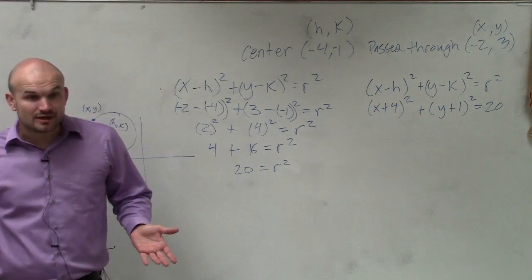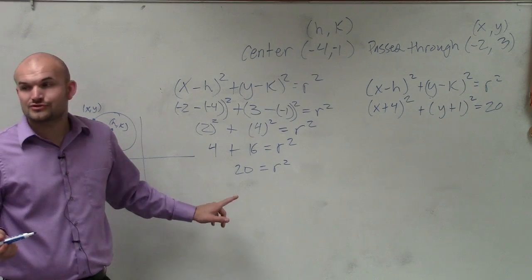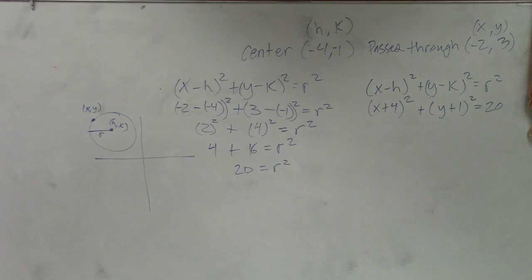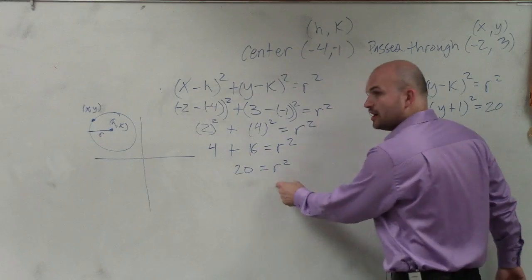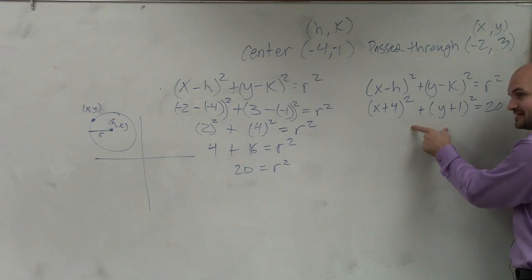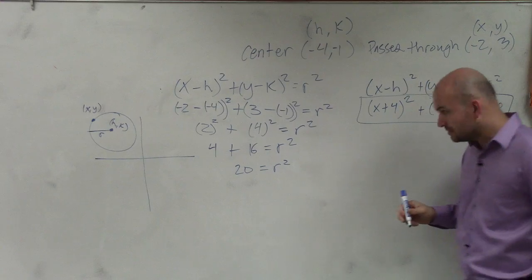Now, what is the radius, though? The radius is not 20. The radius is square root of 20, right? Because it's r squared. What we did here was just to figure out what r was. This is the equation of the circle. That's what the question is asking. What is the equation of the circle? We have to do this to find that.